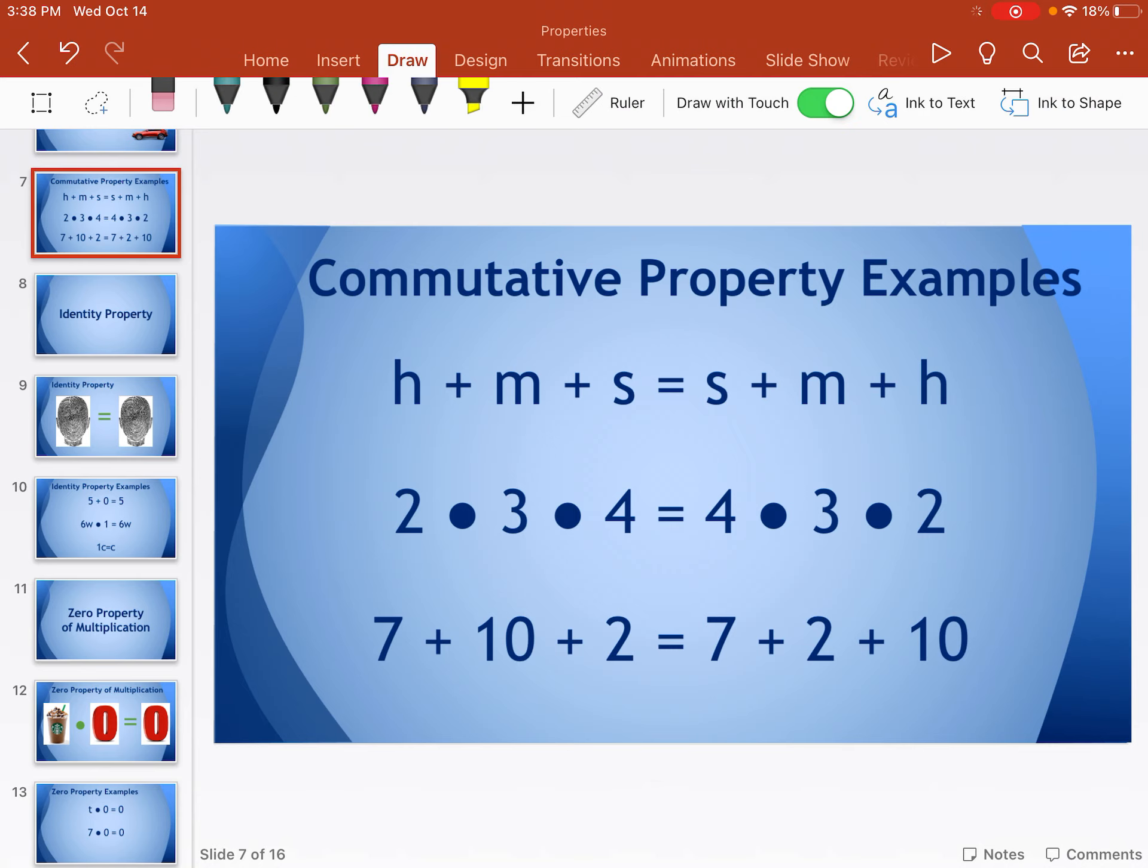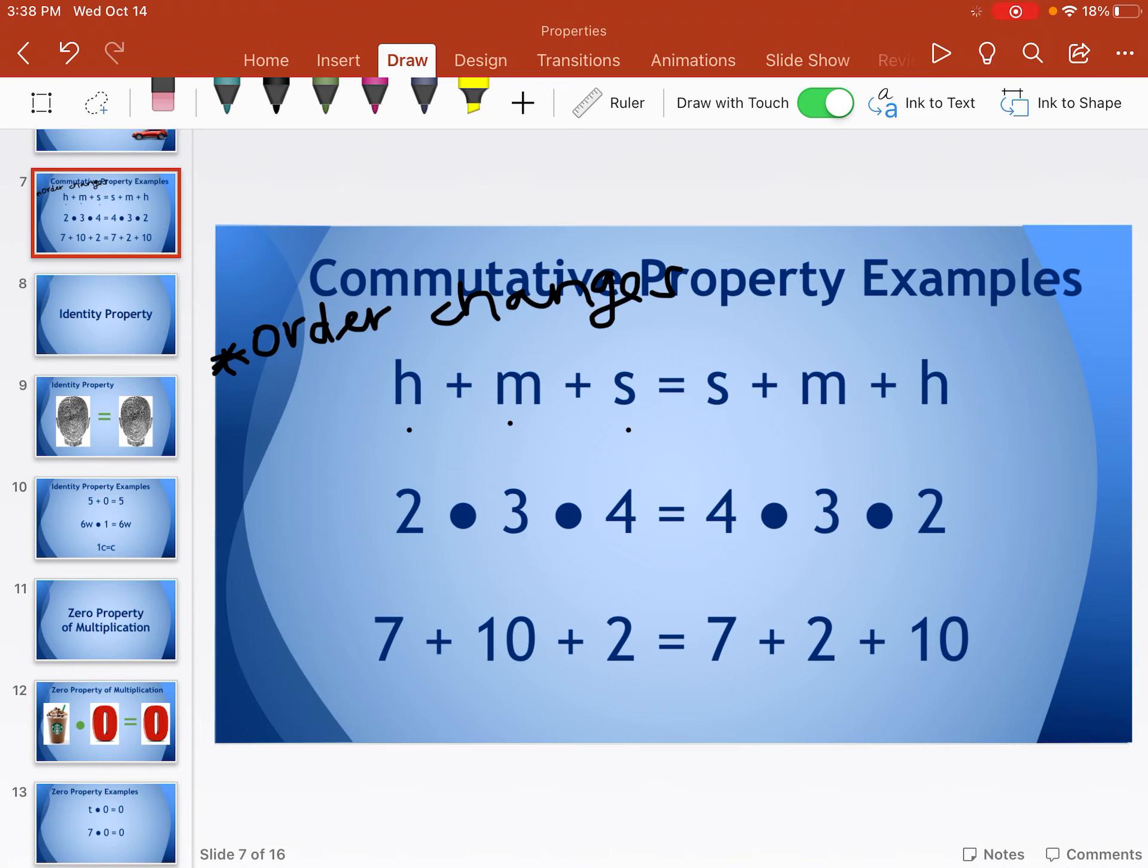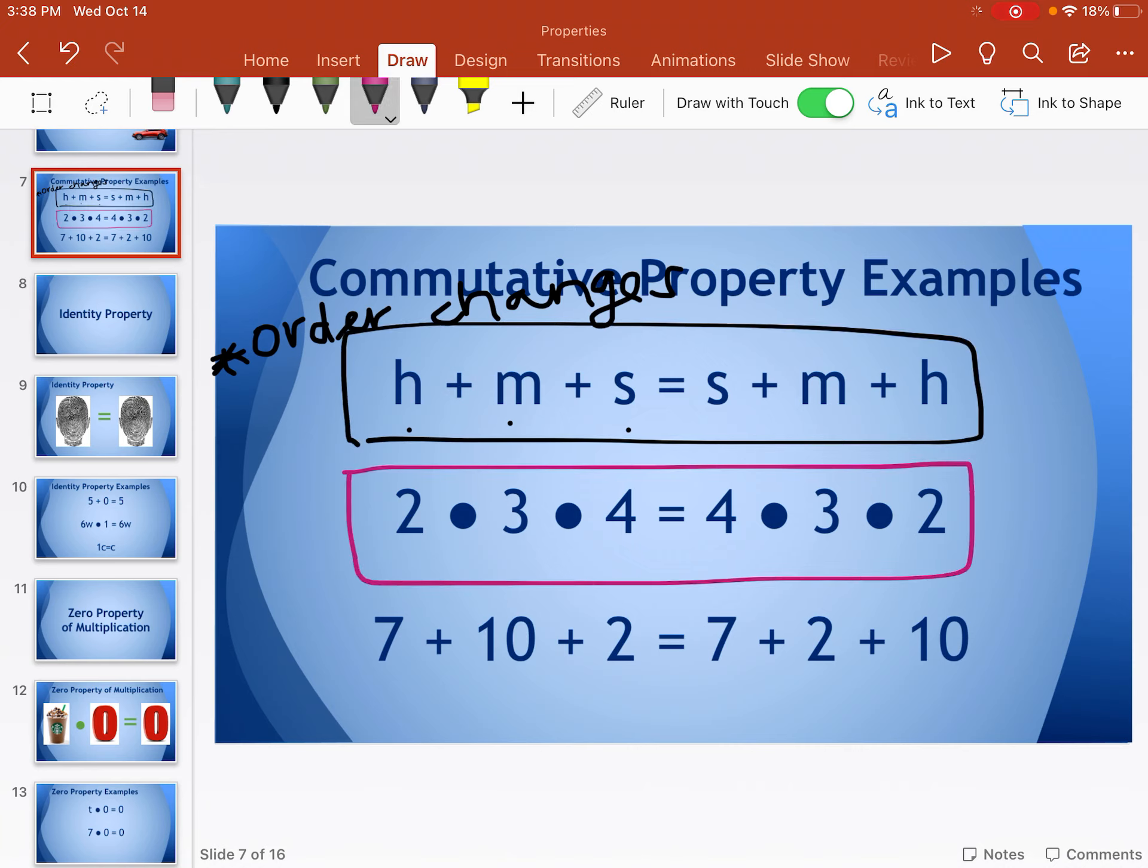Same thing here. So we had house, McDonald's, school, or H plus M plus S is equal to S plus M plus H. So the ways to remember is your commute. You can also just know that it's the order that changes. You want to write yourself a little note about commuting. You can draw yourself a picture with the house, the McDonald's, and the school, whatever it is that's going to help you. Know that the order changes, but it doesn't have to be completely backwards. So there was an addition example right there. Here's a multiplication example. And again, notice two times three times four, four times three times two is completely backwards. But here on our last one, I did seven plus ten plus two, and then seven plus two plus ten. So only these two switched. The seven stayed in the front. And that is also commutative property.